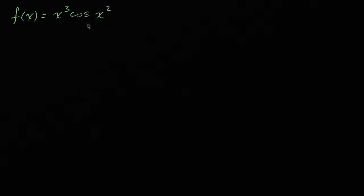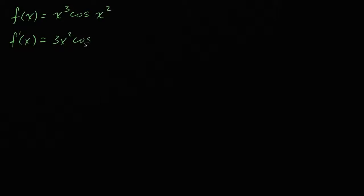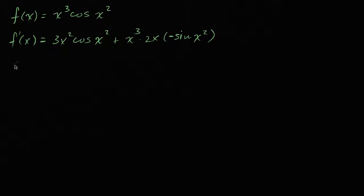I'm assuming you paused the video and attempted this, and there's a good chance you got quite frustrated, because in order to find a Maclaurin series we need to find the derivatives of this function — and as soon as you start to do that, it starts to get painful. f prime of x is going to be, by the product rule, three x squared times cosine of x squared, plus x to the third times the derivative of cosine of x squared, which is two x times negative sine of x squared. So just that first derivative was pretty painful.